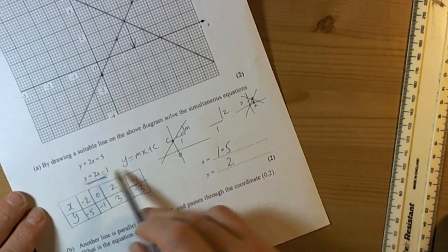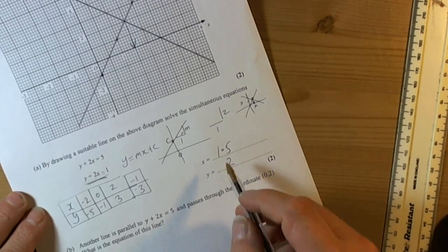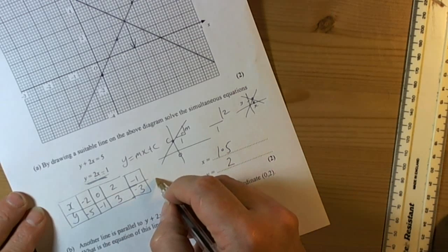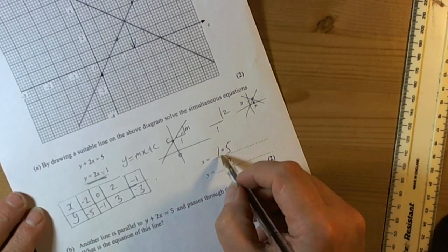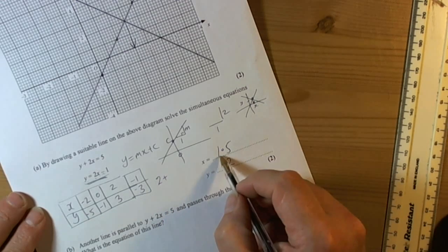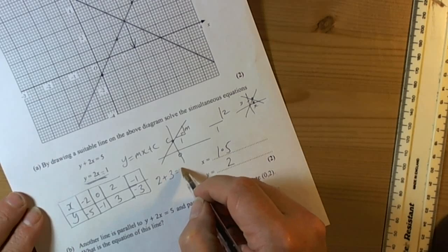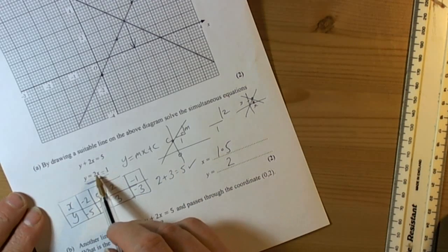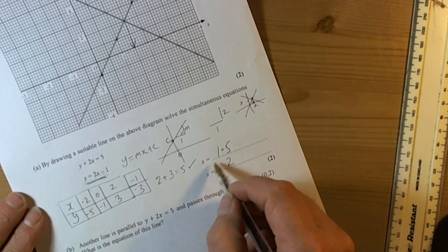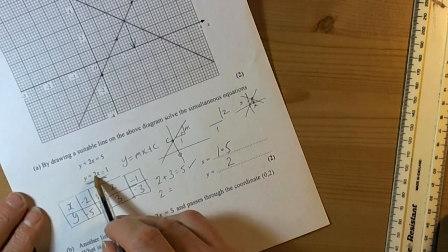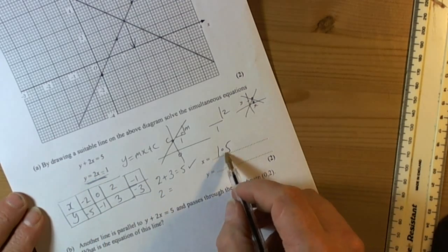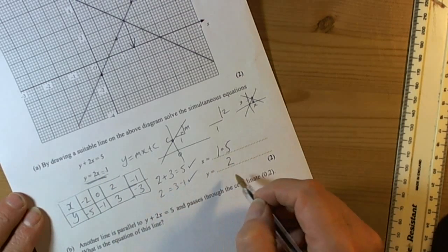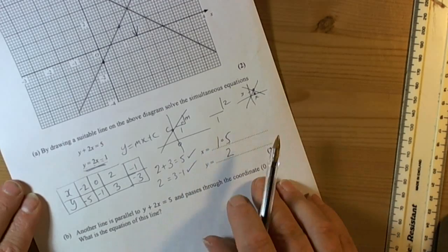Now of course, with simultaneous equations we should always check that this works for both equations. So the first one was y plus 2x, so 2 plus twice the x value, 2 times 1.5 is 3. Does that equal 5? Yes it did. And the second function said that we get the y number, which we think is 2, by doubling the x number, 2 times 1.5 is 3, take away 1. Does that work? Yes it does. So we're happy that that was the solution.